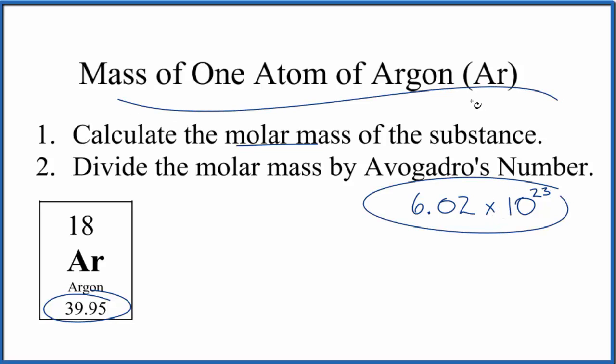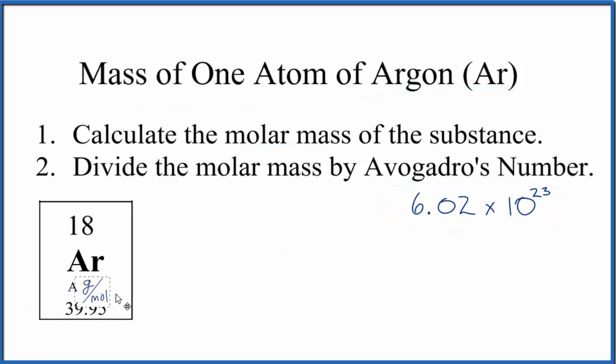That gives us the mass of one atom of argon. And this is an average atom of argon because this is the average atomic mass. So let's give it a try. We can think of this average atomic mass here as having the units of grams per mole. So we have 39.95 grams in one mole of argon.